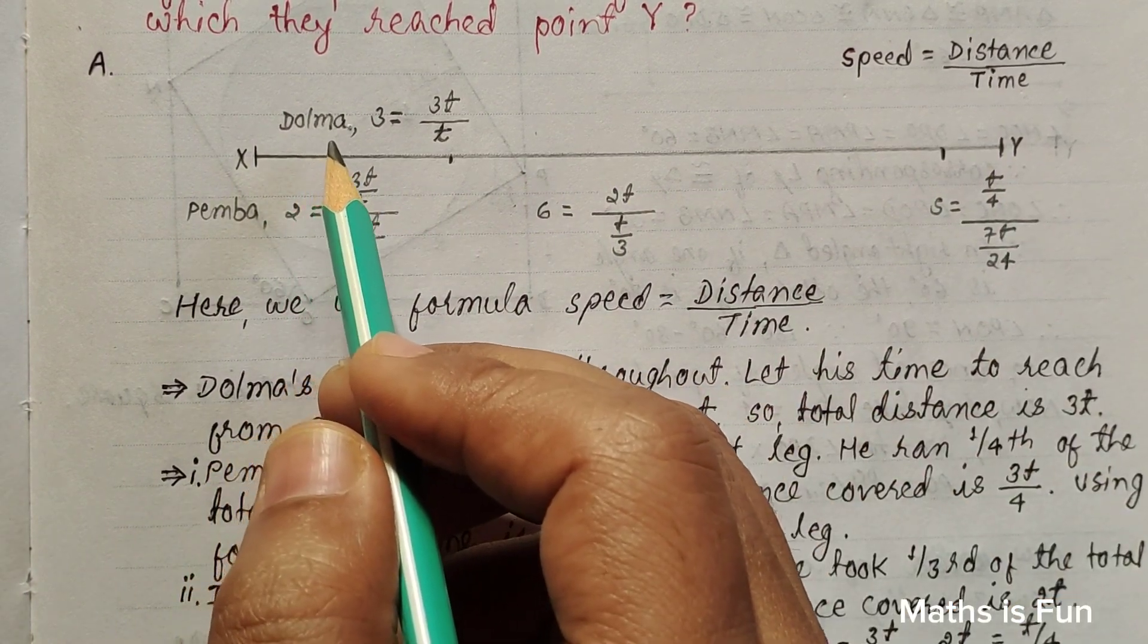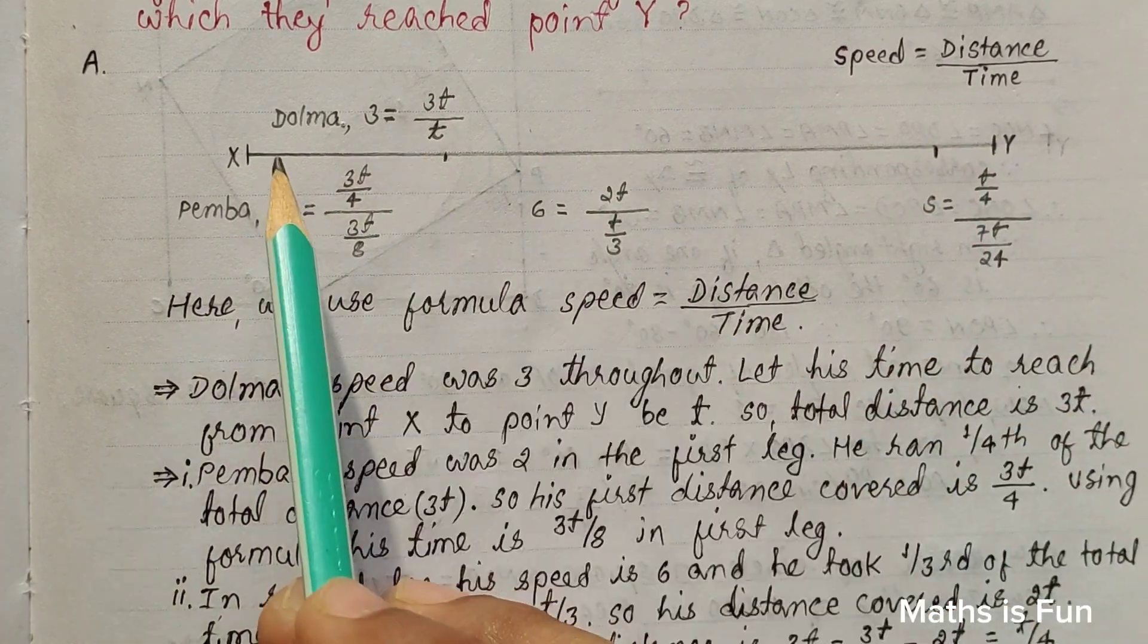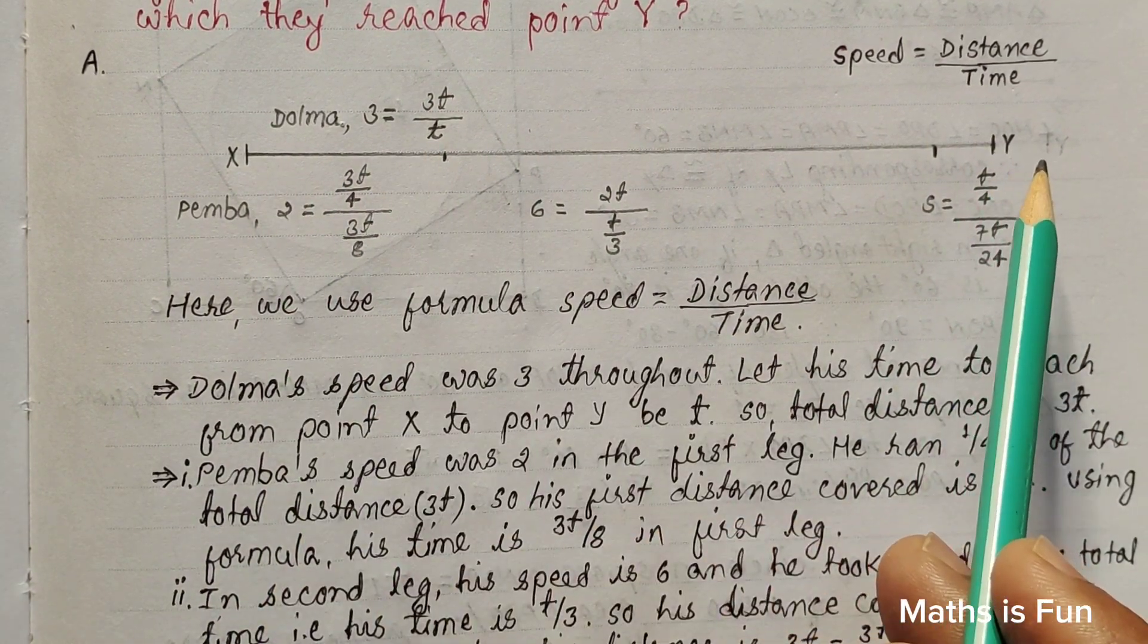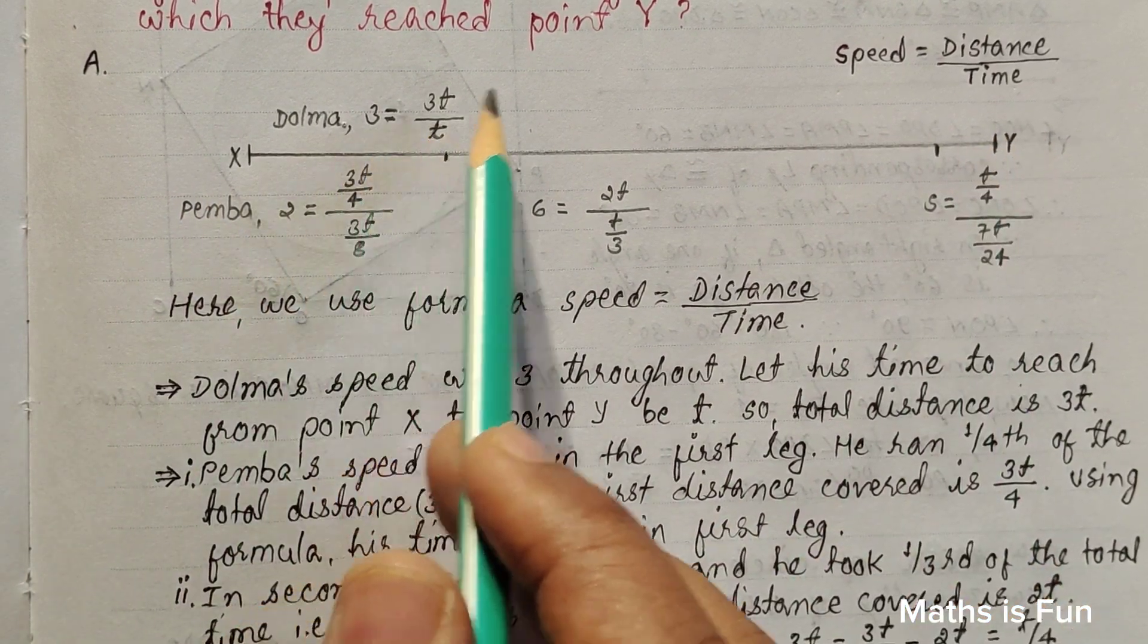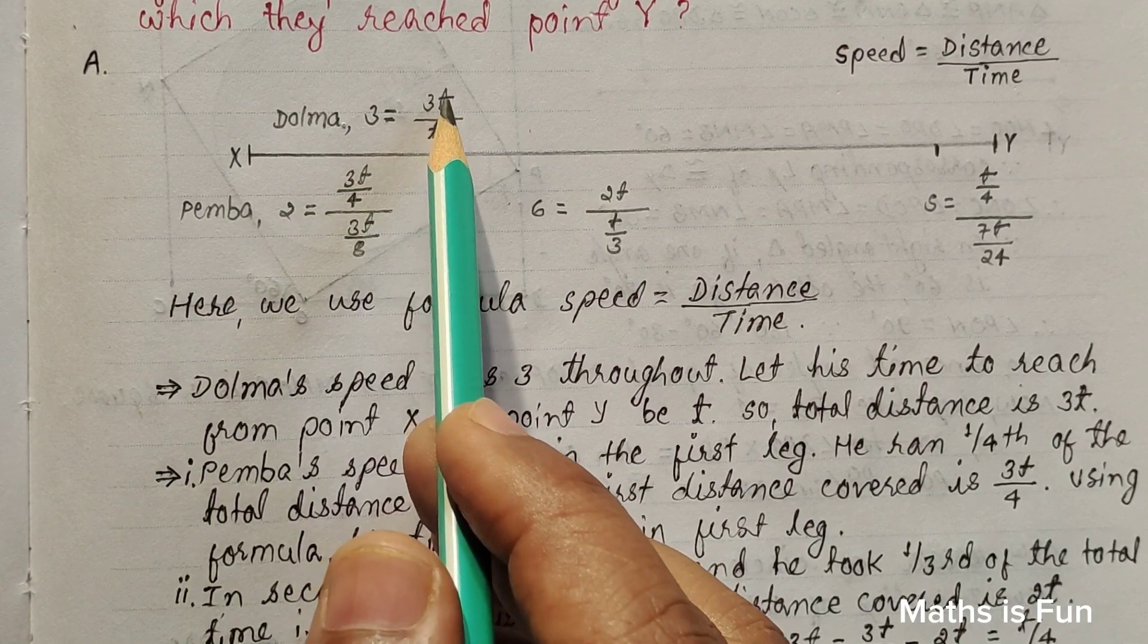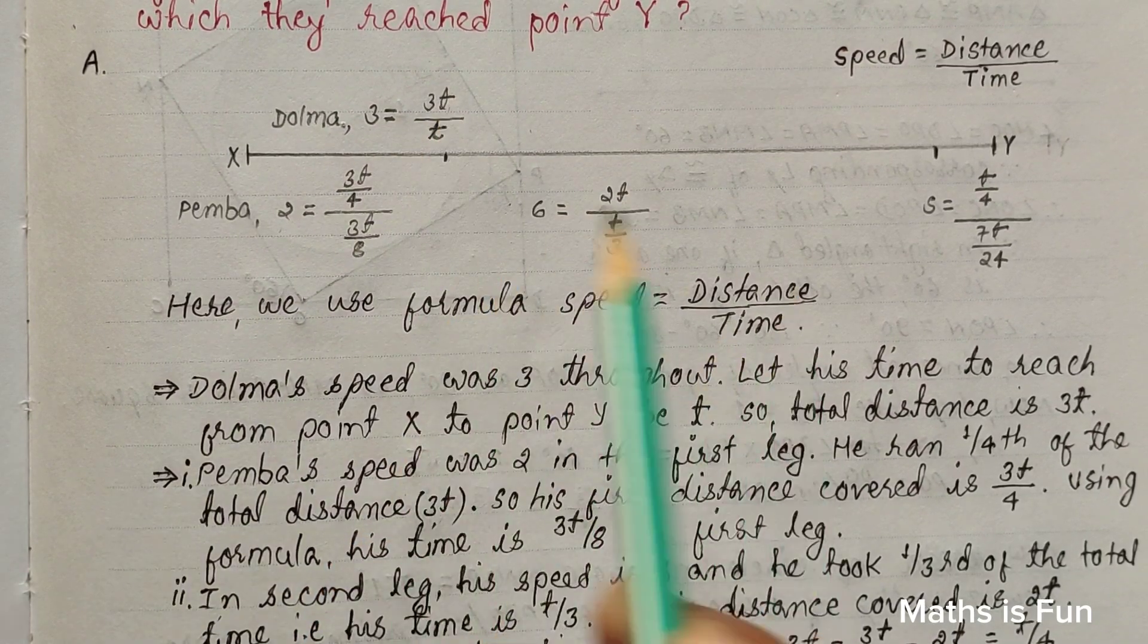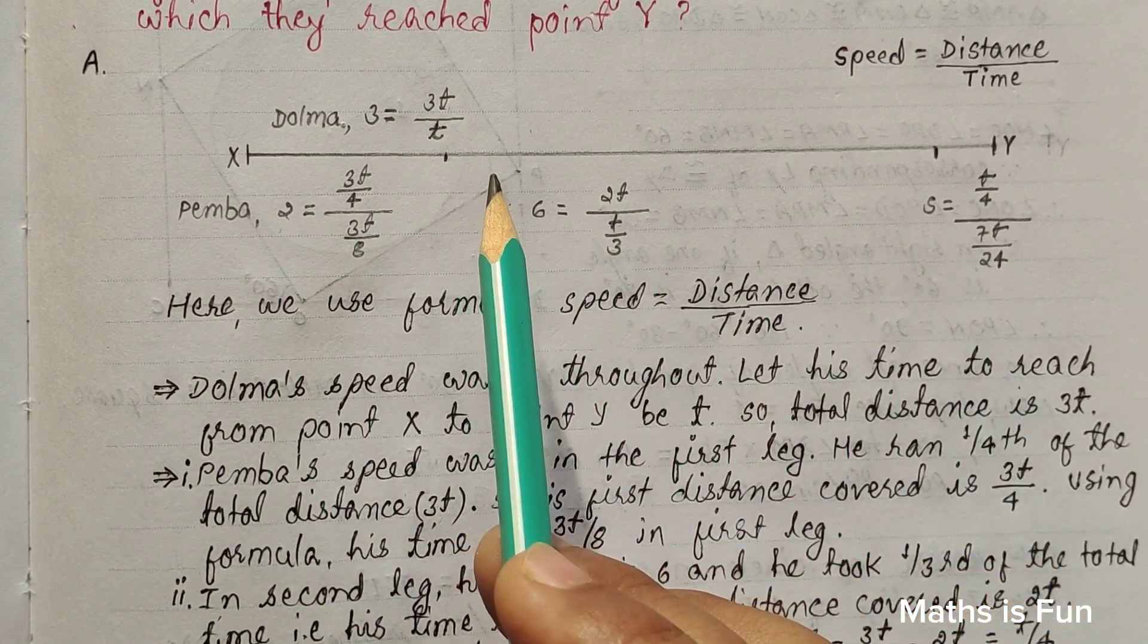Dolma ran uniformly throughout the journey and his speed was 3. Let his time to reach from point X to point Y be T. So we use this formula speed equals distance over time, so his total distance is 3T. Please keep in mind that all these are representations of speed equals distance over time.